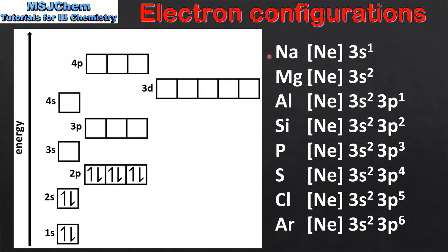Next we move on to the period 3 elements starting with sodium, atomic number 11. Note that we are now using the symbol for neon which represents the core electrons 1s2 2s2 2p6. So we start with sodium which has the electron configuration Ne3s1, and we put one electron in the 3s sub level. Next we have magnesium which is Ne3s2, and we have the second electron also in the 3s sub level.